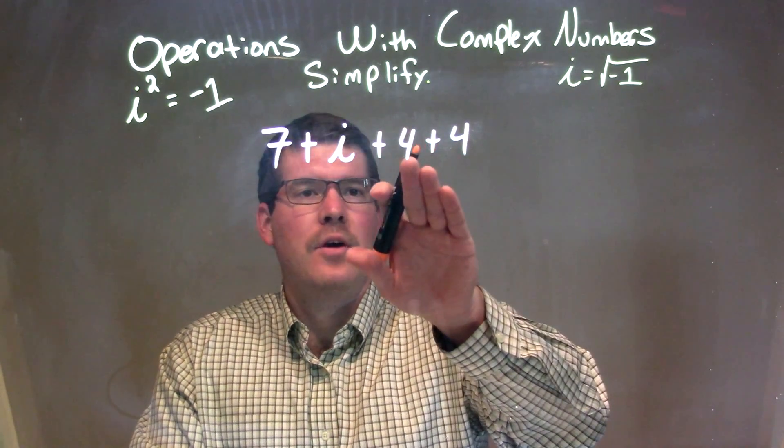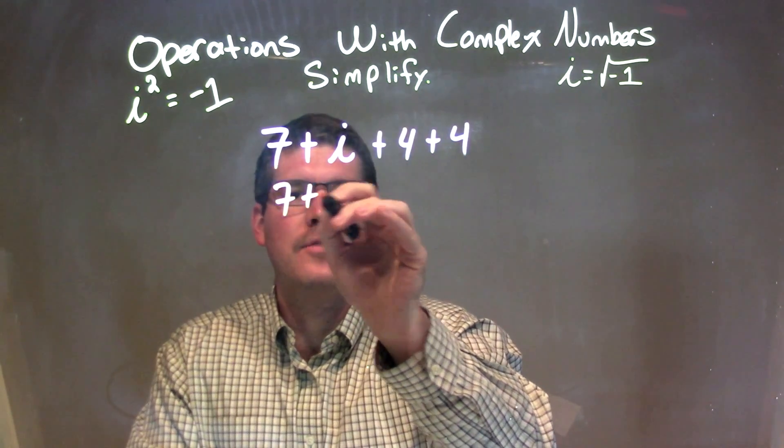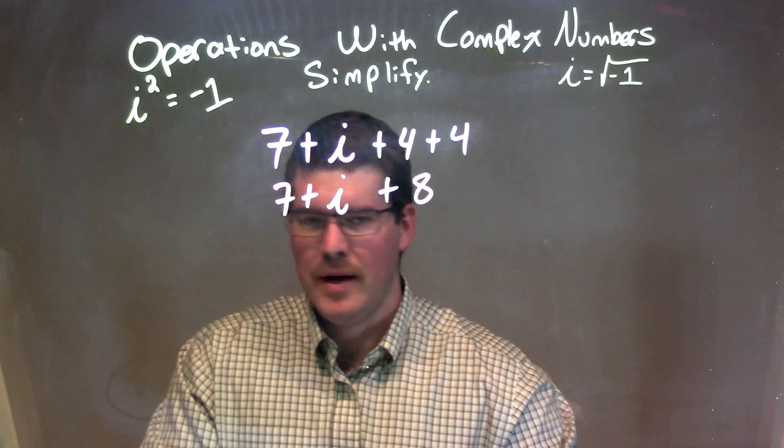Our like numbers are 4s, we can combine them together. 4 plus 4 is 8, so we have 7 plus i plus 8. We also have a 7 and an 8 we can combine.